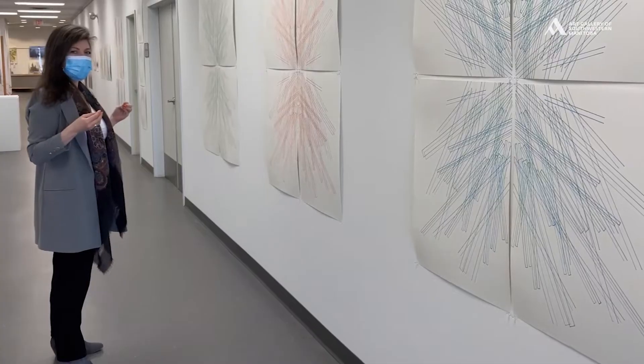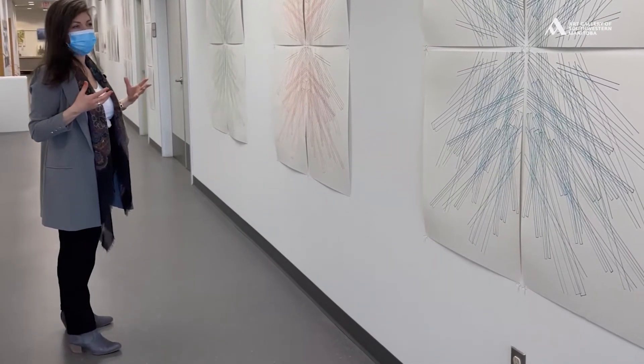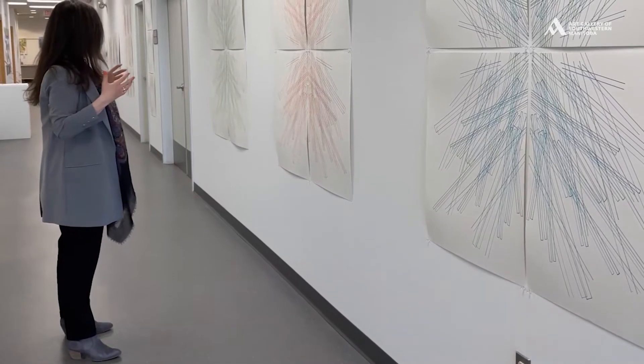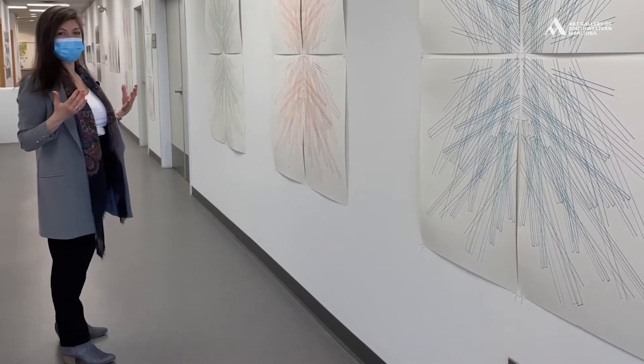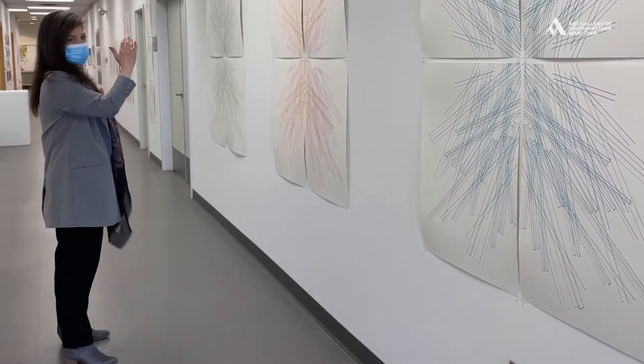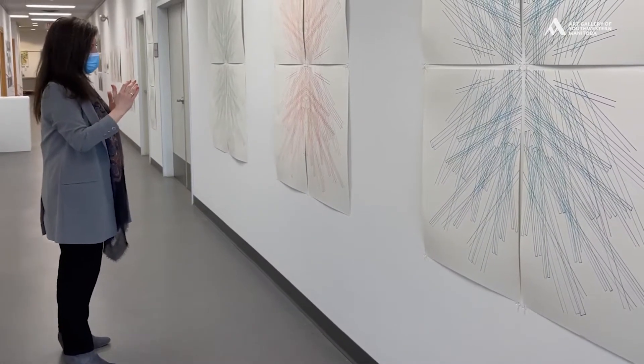And this is why we get the title emergent meticulous, because he's sitting there, he's letting all of these forms come out of his mind organically, and then he methodically duplicates them, replicates them.